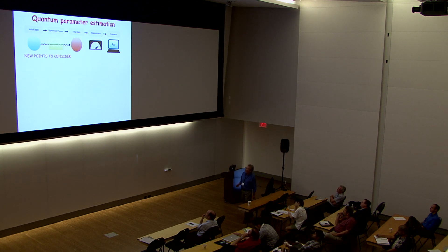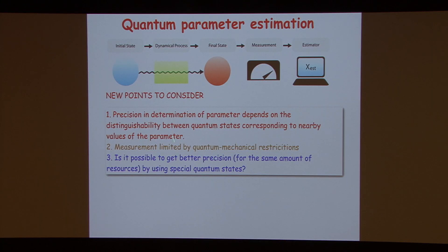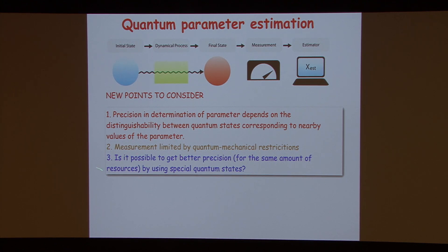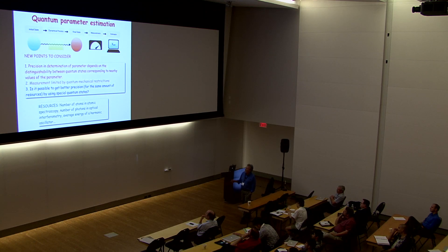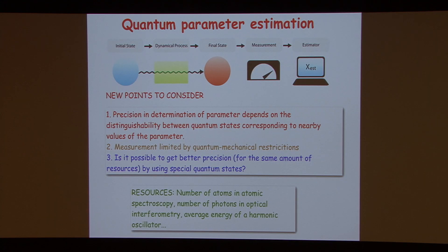What about quantum parameter estimation? There are new points to consider. First, the precision in the determination of the parameter depends on the distinguishability between quantum states corresponding to nearby values of the parameter. Second, the measurement is limited by quantum mechanical restrictions. Third, maybe quantum mechanics could lead us to better precision for the same amount of resources by using special quantum states. Resources depend on the problem: it might mean the number of atoms in atomic spectroscopy, the number of photons in optical interferometry, or the average energy of a harmonic oscillator if you want to estimate a force acting on it.